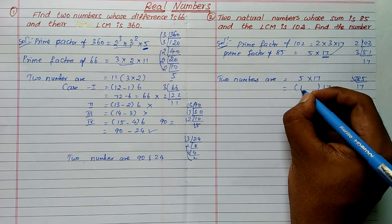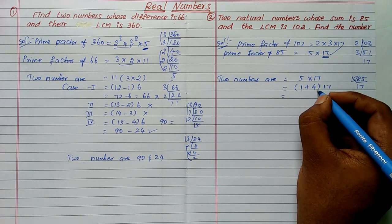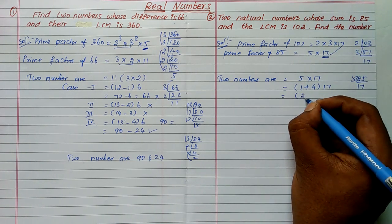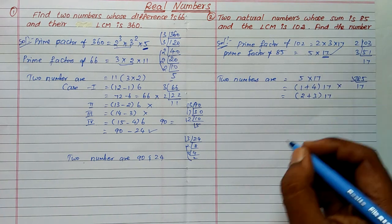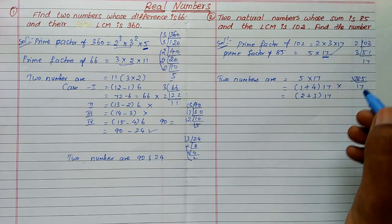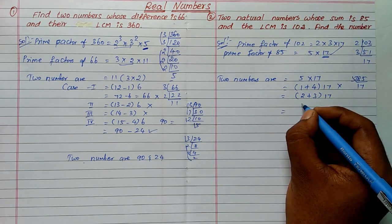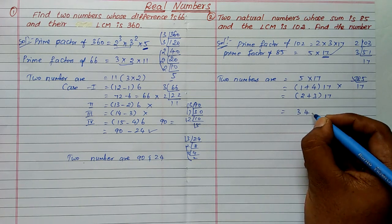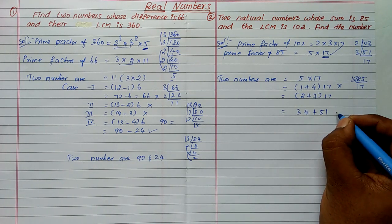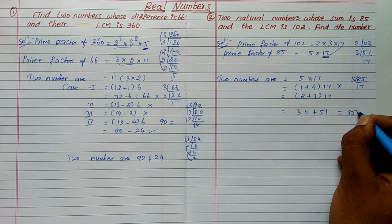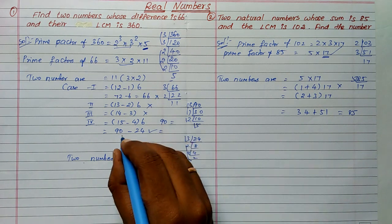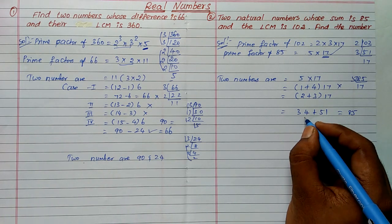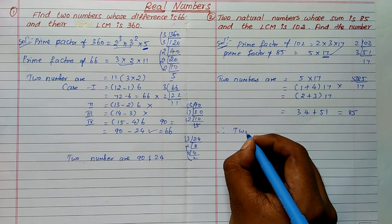Since 85 = 5 × 17, we split 5. First way: 1 + 4. Factor of 4 is 2 × 2, but we need 3 — not possible. Second way: 2 + 3. Here 2 is a factor and 3 is a factor. So we write 2 × 17 + 3 × 17 = 34 + 51. The sum of 34 and 51 is 85, and the difference is 17. Therefore the two numbers are 34 and 51.